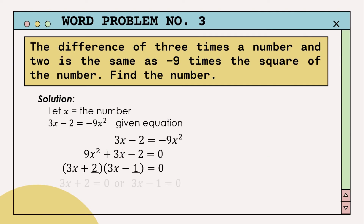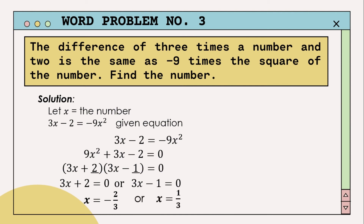We can now solve the equation. This becomes 3x plus 2 equals zero, or 3x minus 1 equals zero. Our first value of x is x equals negative 2 thirds, and the second value of x is x equals 1 third.